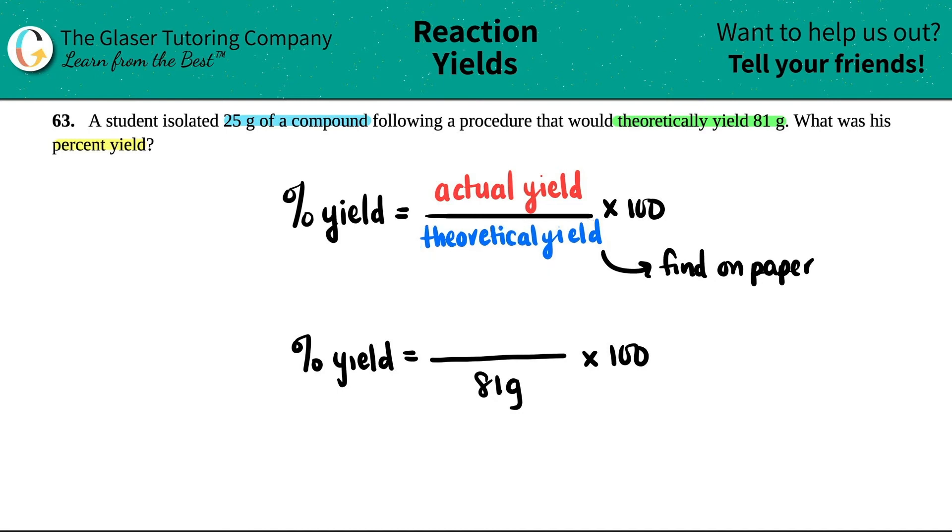However, the student actually isolated, actually produced – isolated kind of means like make – they actually made 25 grams when they did the actual procedure. That's the actual yield. The actual yield is in experiment.